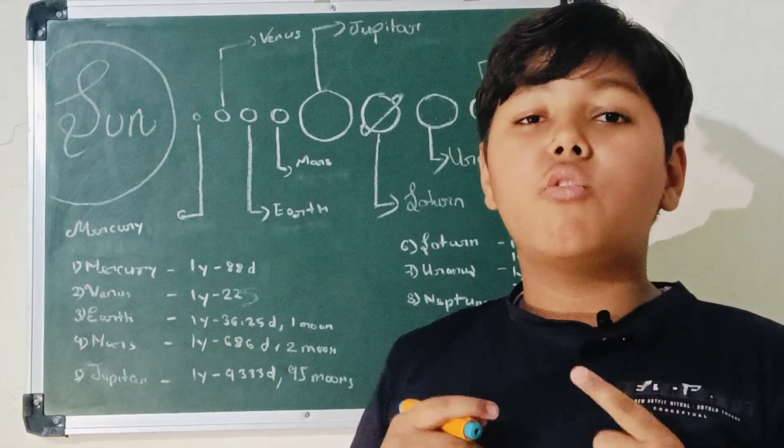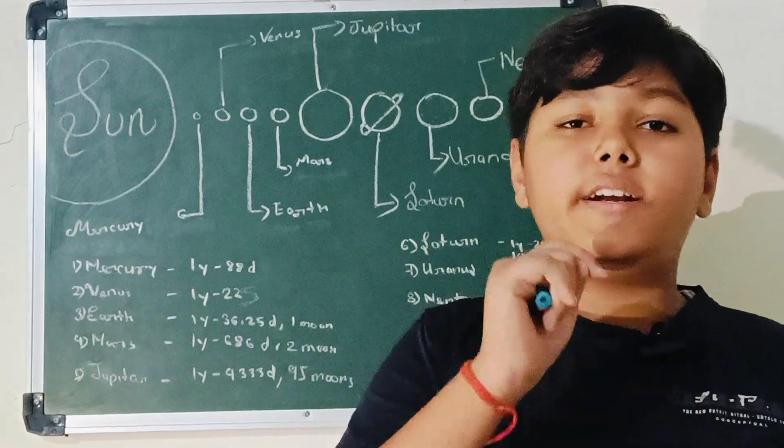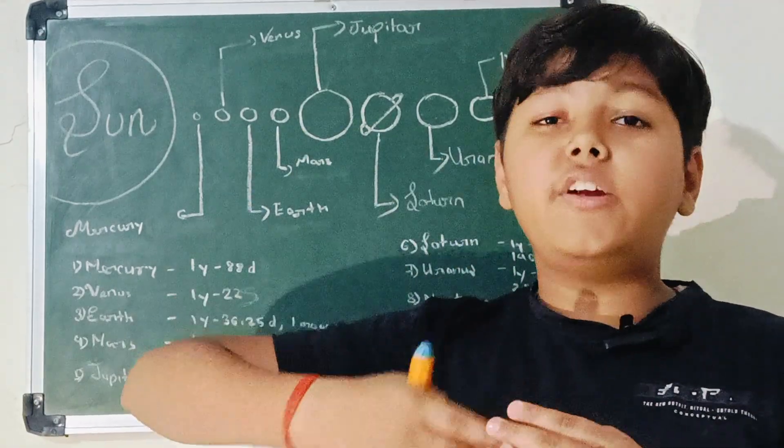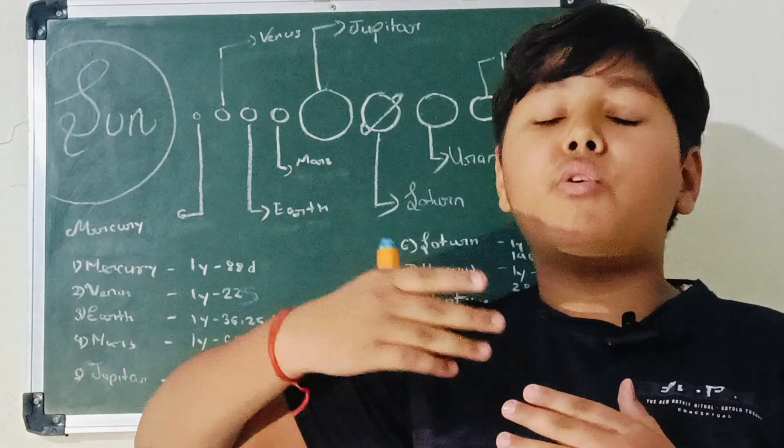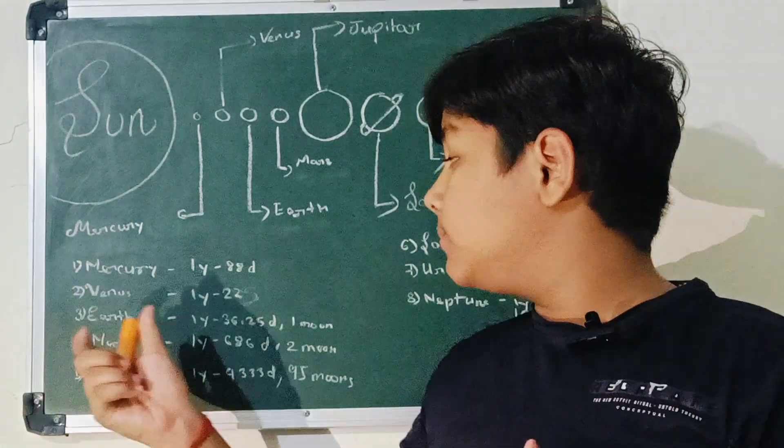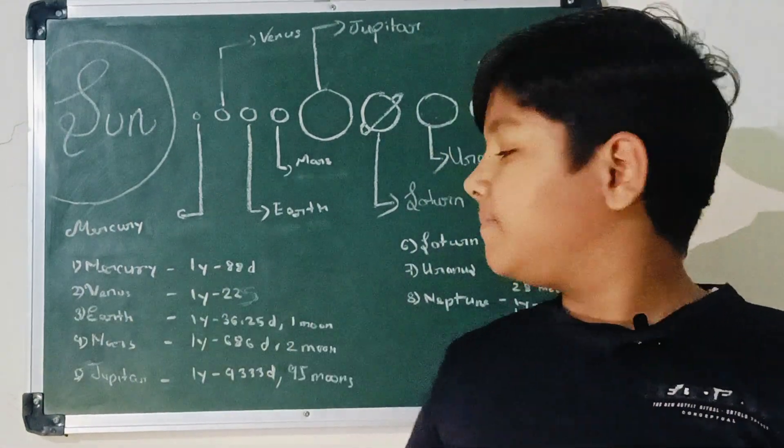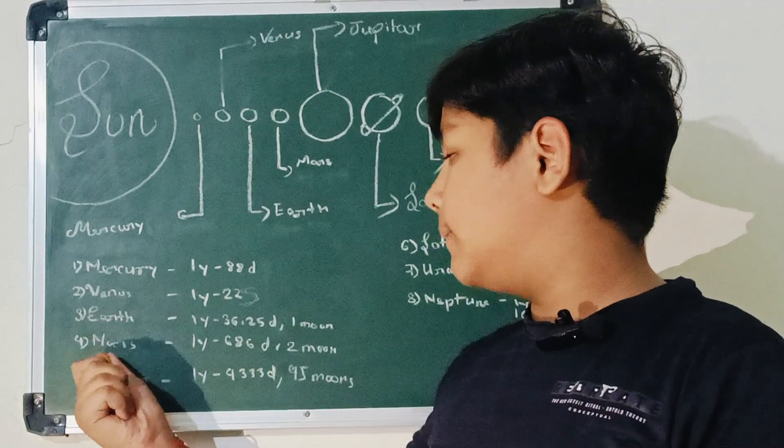So how we count it? We count it as 1 day. So after every 4 years, after every 4 times 0.25, it comes a leap year, an extra Earth day. Then after that comes Mars.